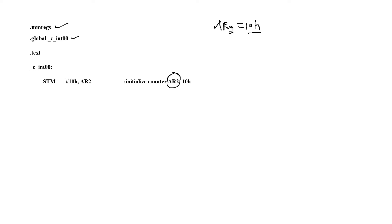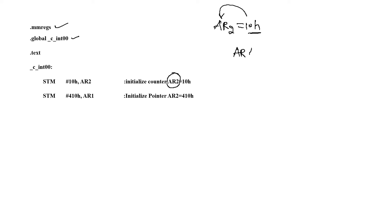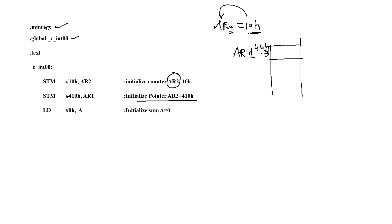_c_INT00 is the label for the beginning. First, we use the counter register AR2 to store the counting value — 10 hexadecimal is stored in AR2. We use AR1 as a pointer register; it points to memory location 410 hexadecimal, initializing the pointer by storing the immediate value 410h to AR1. Next, we clear the accumulator register by loading immediate value 0 hexadecimal to Accumulator A.